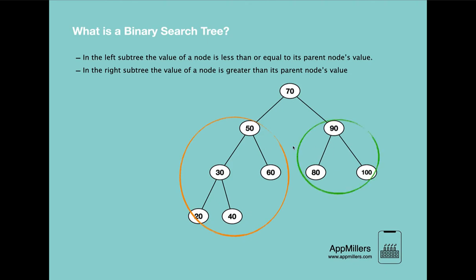The same rule is applicable for the right subtree. In the right subtree we have 90 as a root node and in the left subtree of this right subtree we have 80 which is less than 90 and as a right child we have 100 which is greater than this root node. So as you see for this binary search tree these two properties are applicable.